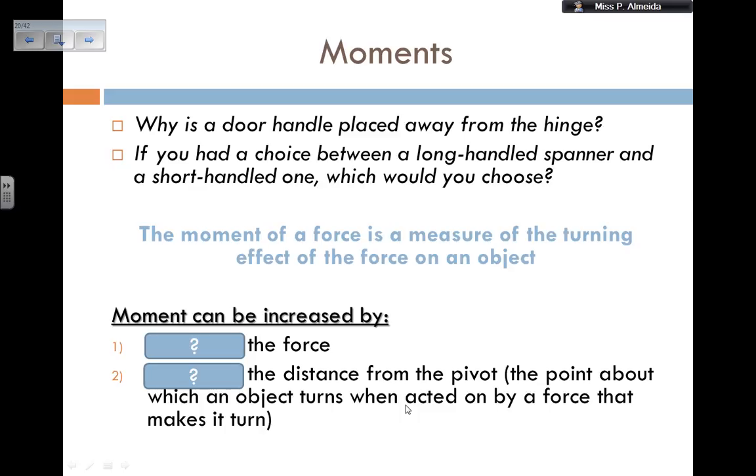This is why when I want to turn something, I should do it from the highest perpendicular distance as possible. The same reason why, if I would have to choose between a long-handed spanner and a short one, I would go for the long one. Because the distance from the pivot would be increased. Therefore, for the same moment, for the same turning effect, my force, my effort would not have to be as big.